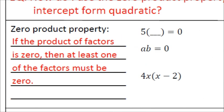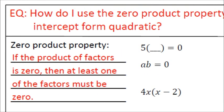So what is the zero product property? The definition is: if the product of factors is zero, then at least one of the factors must be zero. This is something you've been doing for a long time — you know that if you take any number and multiply it times zero, the whole thing changes to zero.